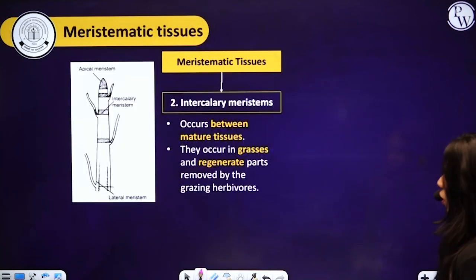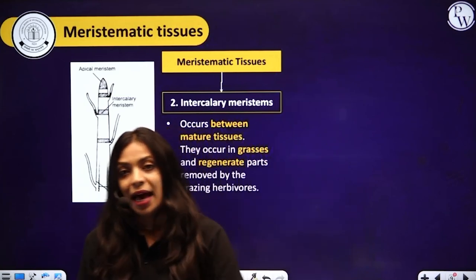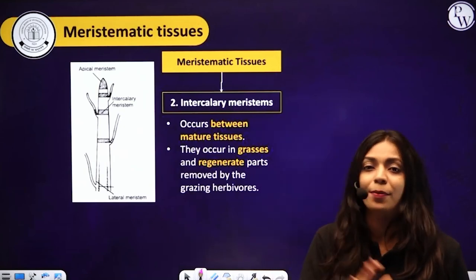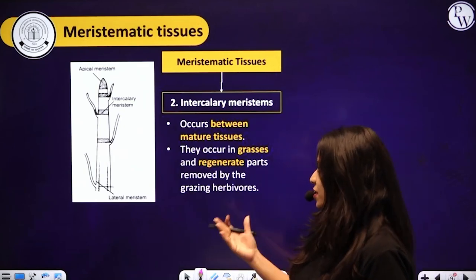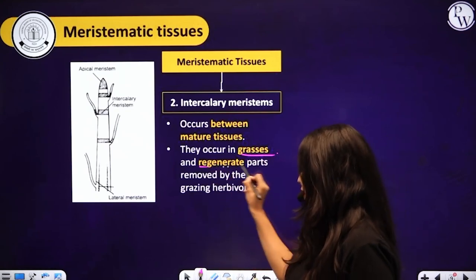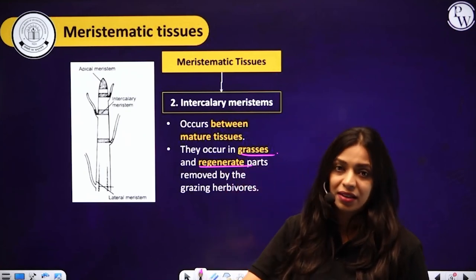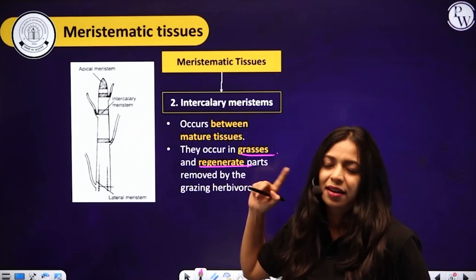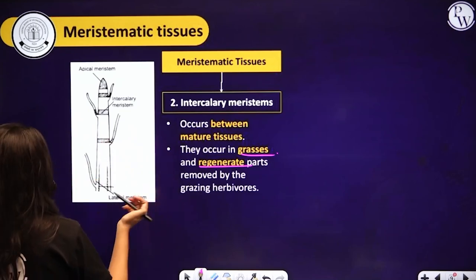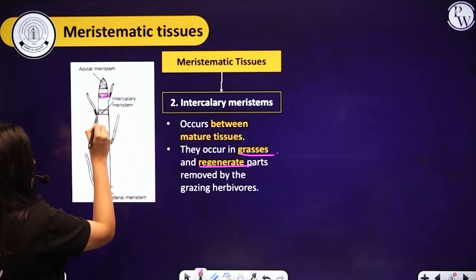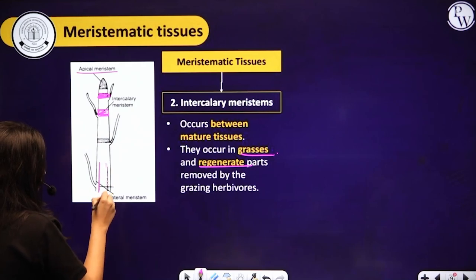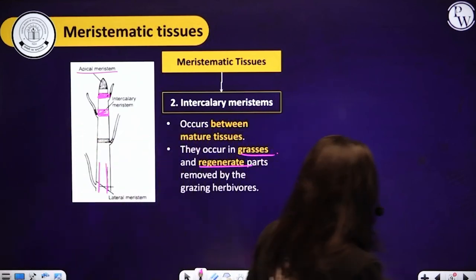Intercalary meristem is seen between permanent or mature tissues. You can usually find them in grasses, which are monocots. Whenever some parts of the plant have been grazed upon by herbivorous animals, these intercalary meristems help in regenerating that part. At the tip you have apical meristem, on the sides you have lateral meristem, and intercalary meristem is present in between permanent tissues.